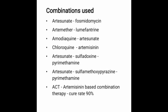The combinations used with artemisinin include: artesunate combined with fosmidomycin; artemether with lumefantrine; amodiaquine with artesunate; chloroquine with artemisinin; artesunate-sulfadoxine with pyrimethamine; and artesunate-sulfamethoxypyrazine with pyrimethamine. These combinations are collectively called ACT — Artemisinin-based Combination Therapy — which has a cure rate of 90 percent.